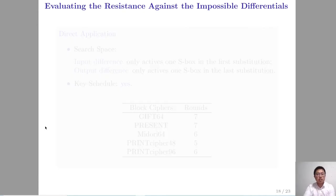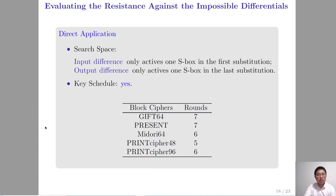In the aspect of evaluating the resistance against impossible differentials, our tool can be applied to evaluate the security of lightweight block ciphers against impossible differentials considering the key schedule in the related-key setting. As a direct application, we apply our tool to KLEIN, PRESENT, MIBS, and PRINT cipher. In the search space where the input difference only activates one S-box in the first substitution layer and the output difference only activates one S-box in the last substitution layer, and considering the key schedule in the related-key setting, the tight bounds in which no impossible differentials exist are 7, 7, 6, 5, and 6 rounds respectively.